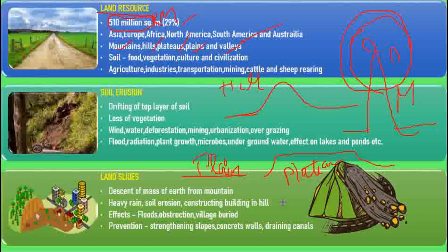A plateau is a raised flat land area. A valley is a low-lying area between hills or mountains, which can be quite steep. On the land there is soil. Soil is very important — it supports food production, cultivation, vegetation, and life itself.